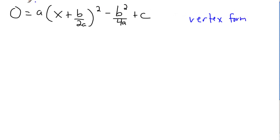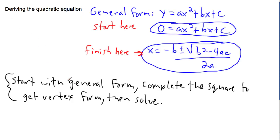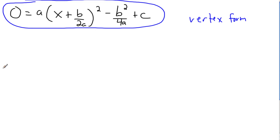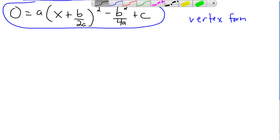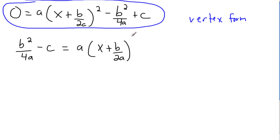This is the vertex form for any quadratic — that's the good news. Now we have to solve for x, which means getting x on its own. The first step is to move the constant terms to the other side: move minus b squared over 4a to the left, giving positive b squared over 4a, then move the plus c over giving minus c. That leaves b squared over 4a minus c equals a times (x plus b over 2a) squared.